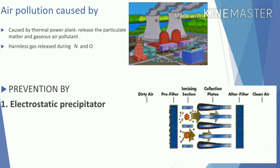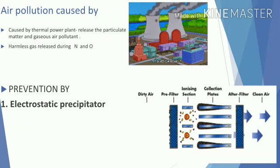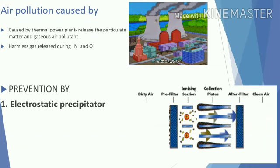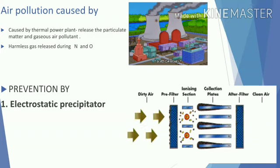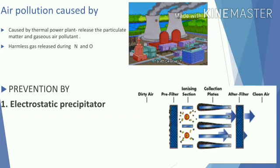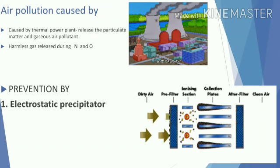The first method is the electrostatic precipitator, commonly referred to as ESP. In examinations, this may be asked for five marks, including a diagram and explanation. As you can see in the picture, dirty air passes through a pre-filter, then through ionizing sections where electric charges are applied, and then through collection plates, after which clean air comes out.